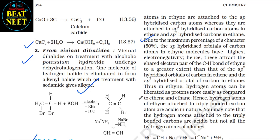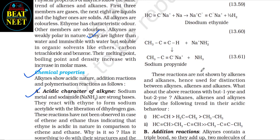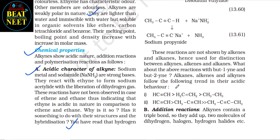Due to maximum percentage of s-character (50%), the sp-hybridized orbitals of carbon in ethyne have the highest electronegativity, attracting the shared electron pair of the C–H bond to a greater extent than sp² or sp³ orbitals. Thus hydrogen atoms in ethyne can be liberated as protons more easily. The acidic trend is: C≡C–H > C=C–H₂ > C–C–H₃. The formation of monosodium ethynide, disodium ethynide, and sodium propiolate confirms this; these reactions are not shown by alkenes and alkanes.